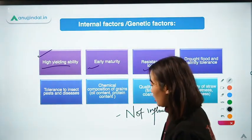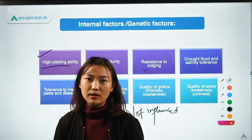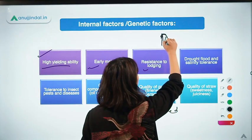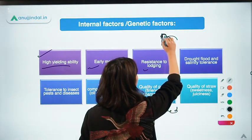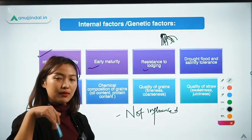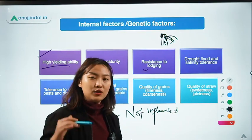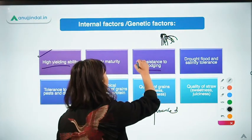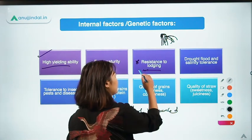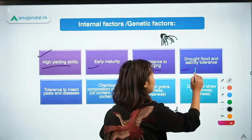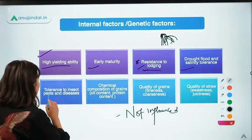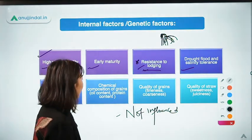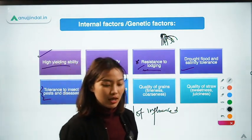Another genetic character is resistance to lodging. Lodging is a condition mainly in cereals where the neck or stem bends over at the edge where the grains are forming. This is very common in cereal crops. Genetic factors also give resistance to droughts and salinity tolerance, and tolerance to insect pests as well as diseases. The chemical composition of the grains can also be altered through genetic makeup.